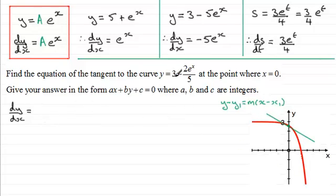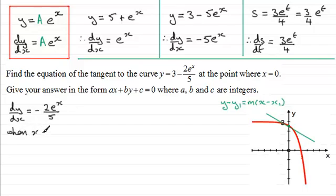By finding dy/dx, it will give us the general gradient at any point x on the curve. Differentiating the 3 gives 0, but differentiating minus 2e to the x over 5 gives minus 2 fifths e to the x. Now I want to find the gradient at x equals 0: when x equals 0, anything to the power 0 is 1, so dy/dx equals minus 2 times 1 over 5, which is minus 2 fifths.